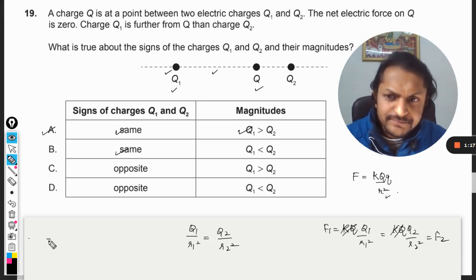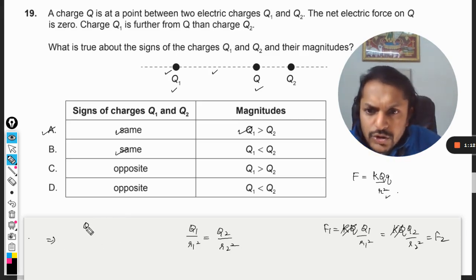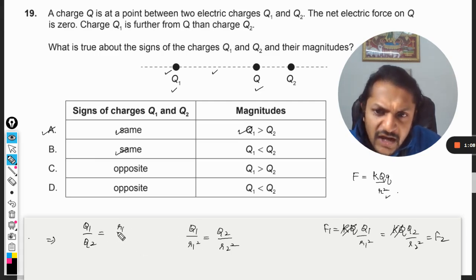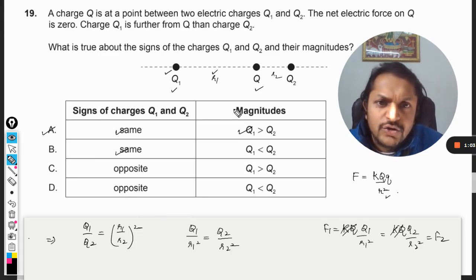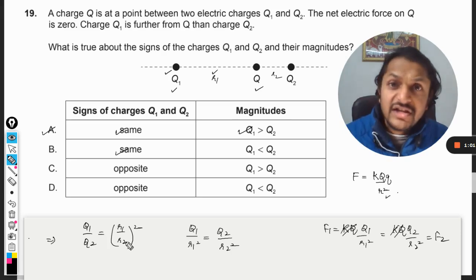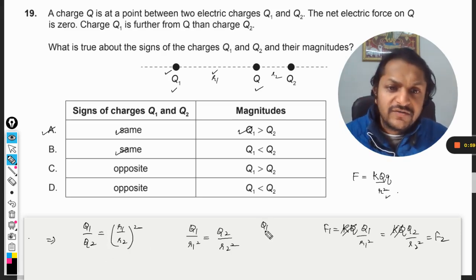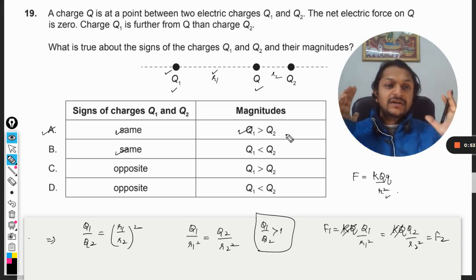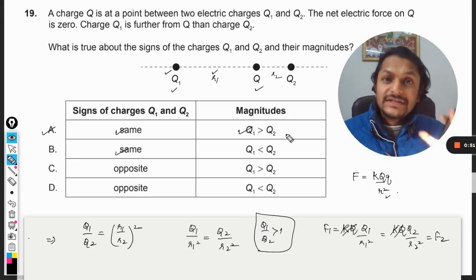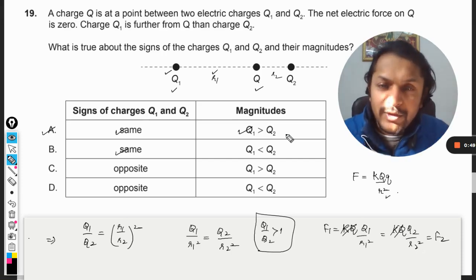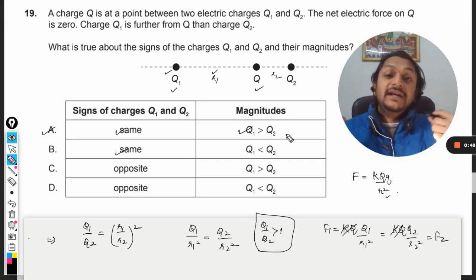From here we want to compare q1 and q2, so q1 divided by q2 is r1 divided by r2 whole square. This is r1, this is r2. r1 by r2 is greater than 1, it means q1 divided by q2 has to be greater than 1. It only means that q1 is bigger than q2. So this is the mathematical background behind this question.